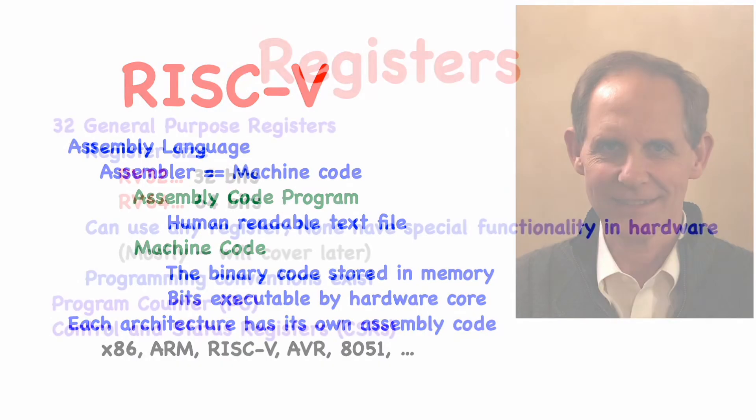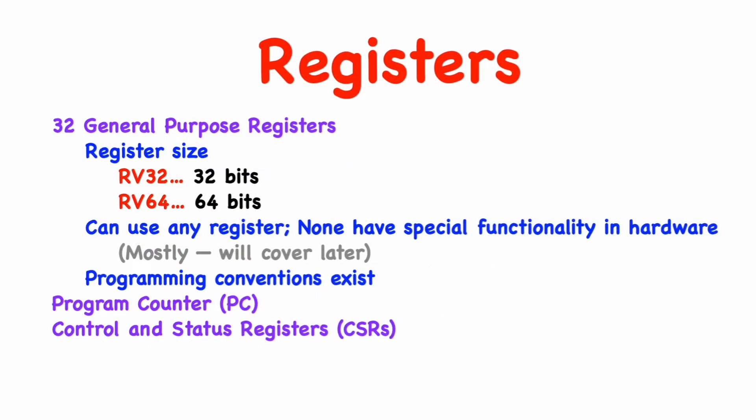So where shall we begin? The first question to ask about any processor core is what registers does it have? In the case of RISC-V, there are 32 general-purpose registers. There are two main RISC-V variants. There's RV32 and RV64. In RV32, the registers are 32 bits in size, and in RV64, they are 64 bits in size. These are general-purpose registers, which means that for any instruction that uses a register, we can provide any one of these registers. None have any special functionality as far as the hardware is concerned.